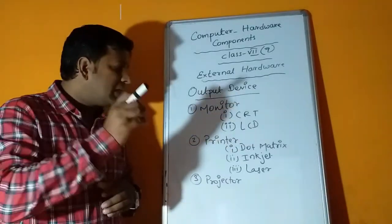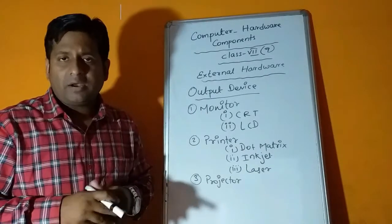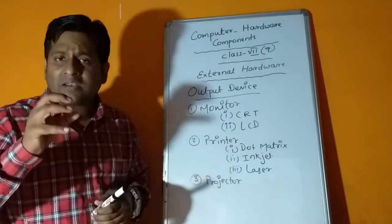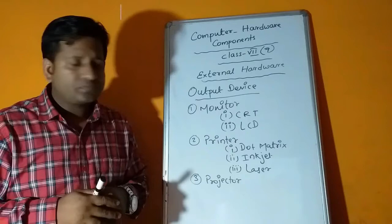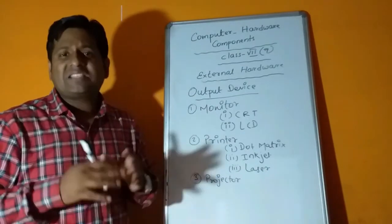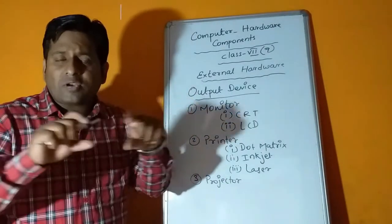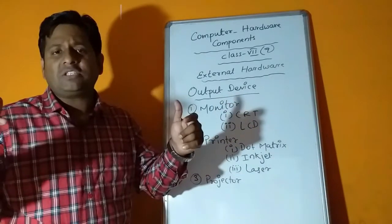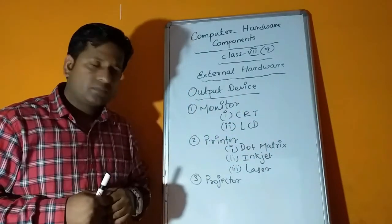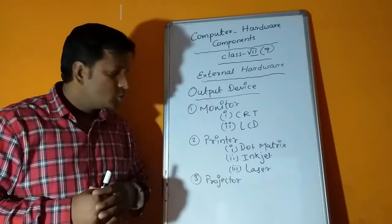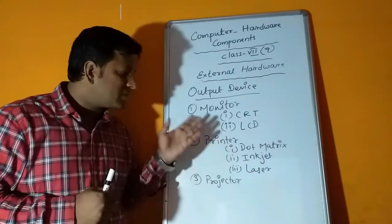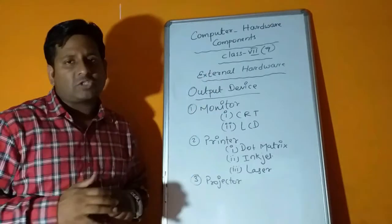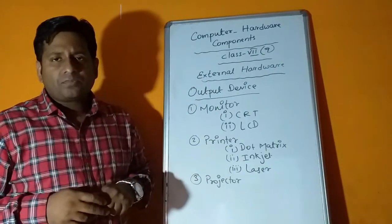Next is inkjet. Inkjet is good for image printing and photo printing. It has ink in a small cartridge and that ink is spread on the paper. Print quality is good. But the best one is laser printer. It has powder ink kept in a drum and based on rotations it prints on paper. So printers are categorized in three different parts: dot matrix, inkjet and laser.